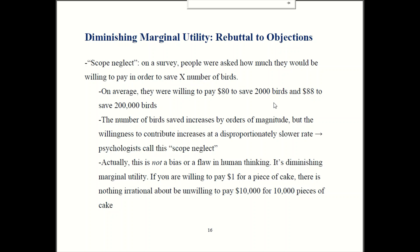Just because you have diminishing marginal utility for extra slices of cake. So one slice for one dollar may well be worthwhile. However, because marginal utility is diminishing, buying ten thousand pieces for ten thousand dollars does not make sense. Likewise, saving two thousand birds for eighty dollars could be reasonable, but saving two hundred thousand birds for eight thousand dollars would perhaps not be reasonable because there could be diminishing marginal utility to saving birds. Just like there's diminishing marginal utility for everything else.